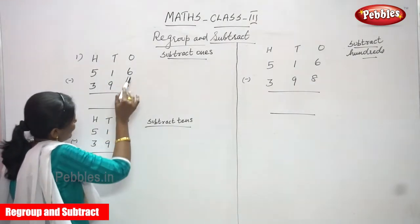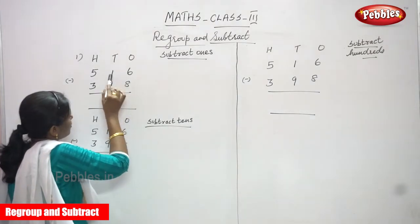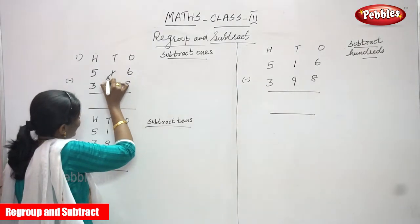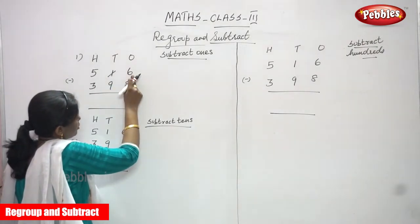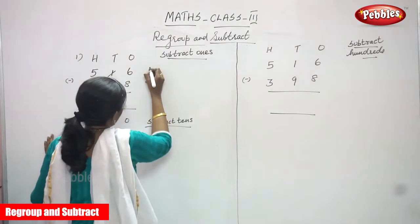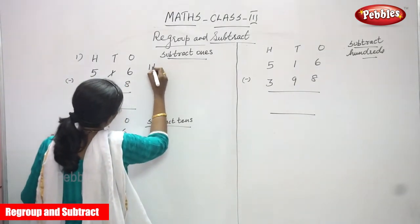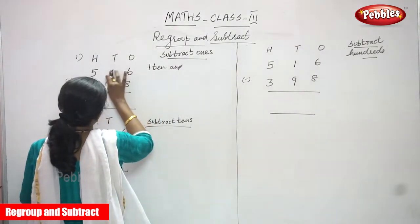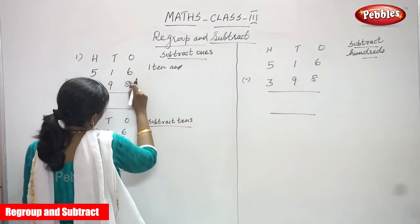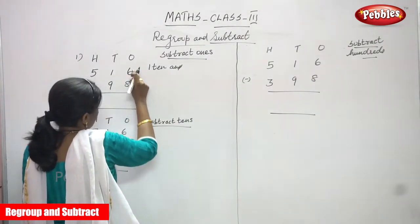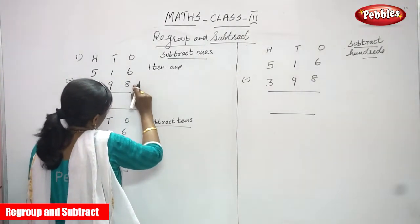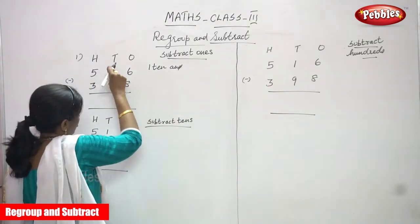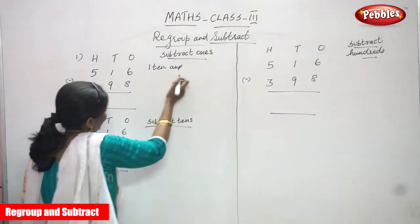In the ones place, the number is 6. Six is not enough to subtract 8, so we have to borrow from the tens place. Six is a smaller number and eight is a greater number, so you can't subtract. We have to borrow from the tens place. The number in the tens place is 1 — that is one ten.